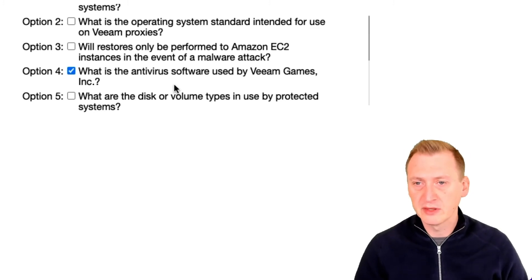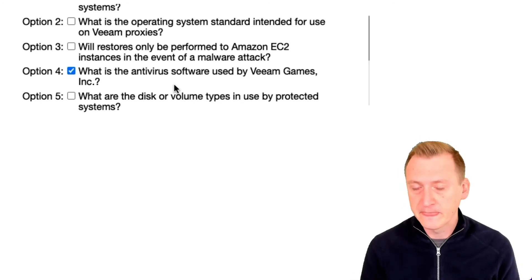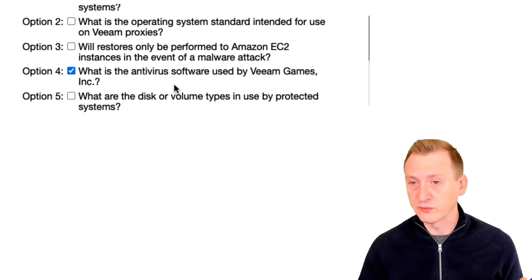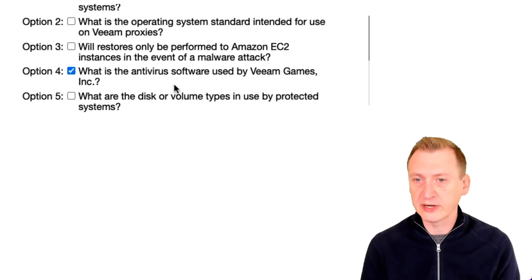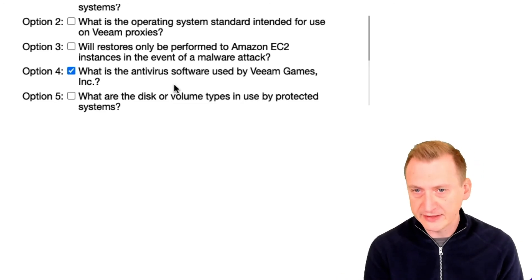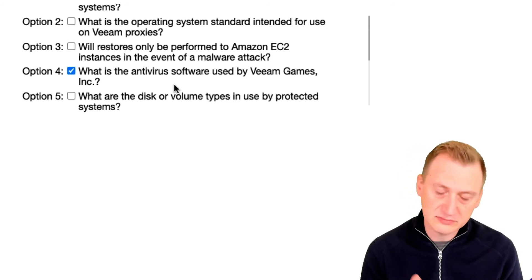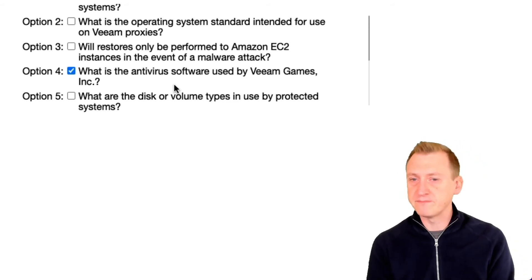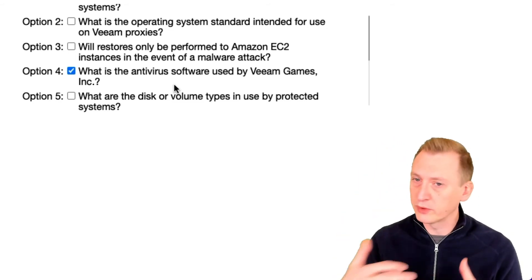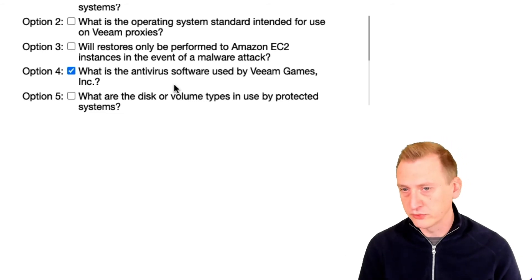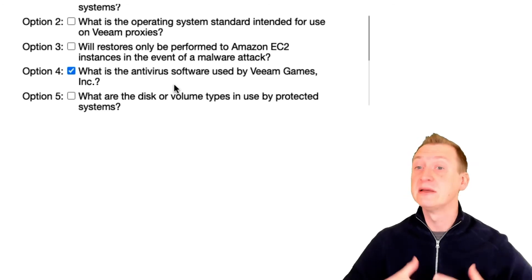If we want to do antivirus scans as part of the restore — aka Secure Restore — it needs to be antivirus software that we can work with. Looking at the user guide, there are about four vendors that work out of the box: Kaspersky, ESET, Windows Defender, and Symantec. There is also an antivirus XML file that can be adjusted to work with other vendors, but we need the error codes from those vendors. So knowing which one they have is good, because it may just work out of the box.